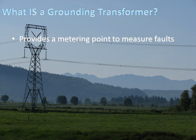A third function of grounding transformers is to provide a metering point to measure faults. Since all ground fault currents flow back through the neutrals of the system, it's a convenient place to put a CT to monitor these faults for system protection.